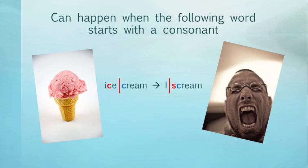This is a little less common, but re-syllabification can also happen when the following word starts with a consonant. Here we have 'ice cream' — cream starts with a consonant, not a vowel. But still, the S sound in 'ice' can move over and it can sound like 'I scream'. So they both can just sound like 'ice cream'.